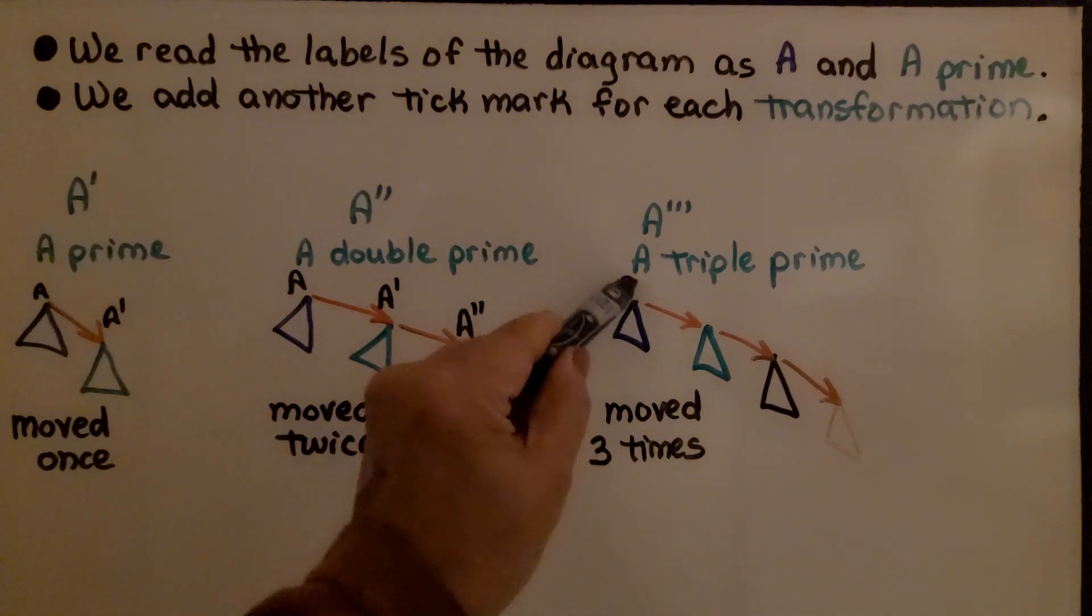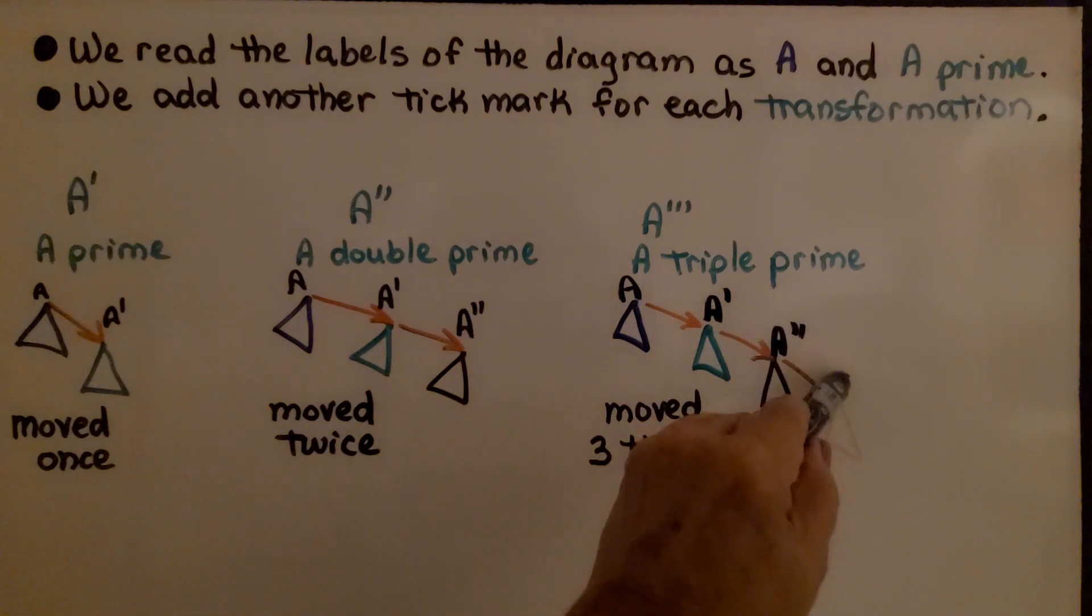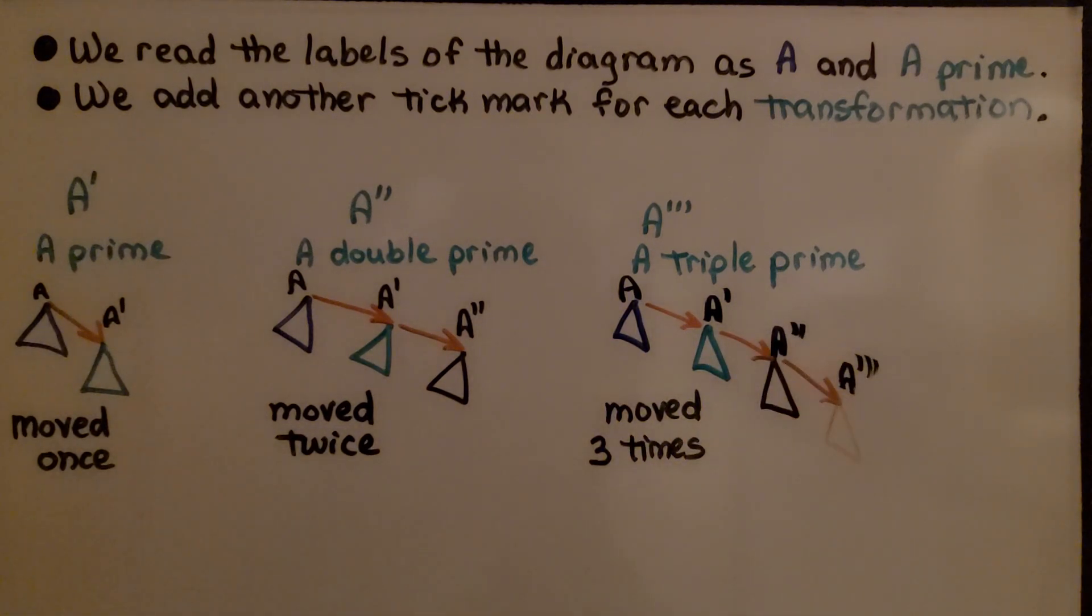This is A. This is A prime. This is A double prime. And this is A triple prime. By looking at those tick marks, we know how many times it moved.